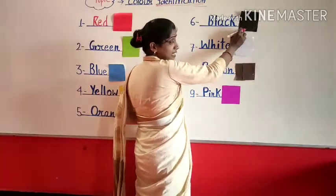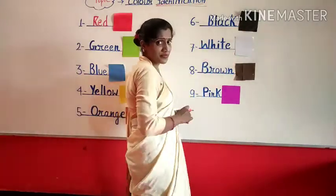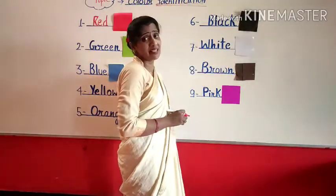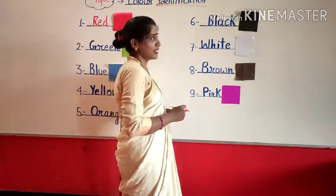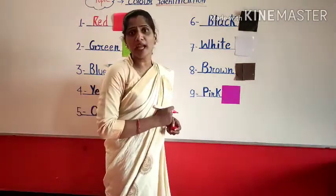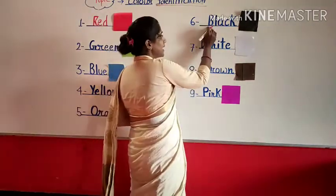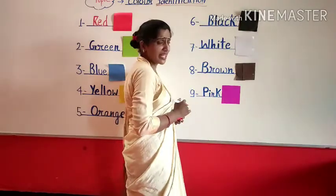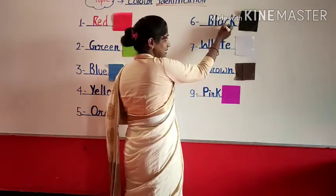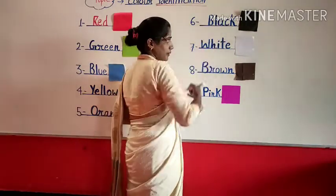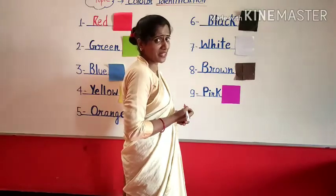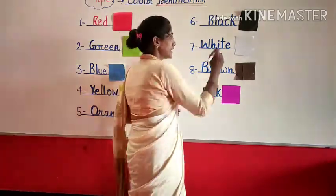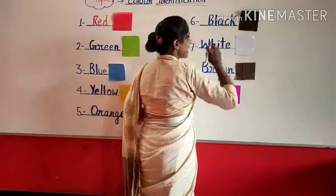Look here. Which color is this? This is black. And what is the spelling of black? B-L-A-C-K. Once again, B-L-A-C-K. Black. I know you know the spelling of black. This is black color.